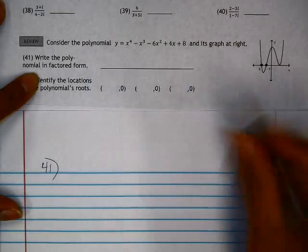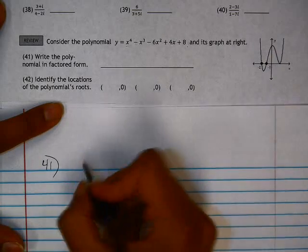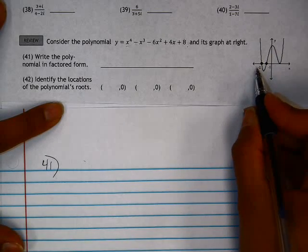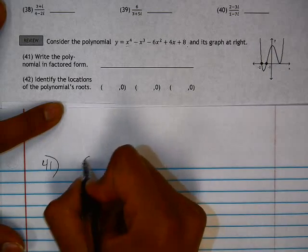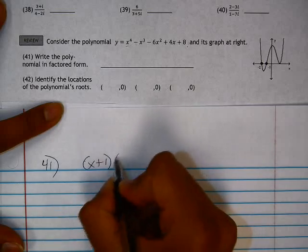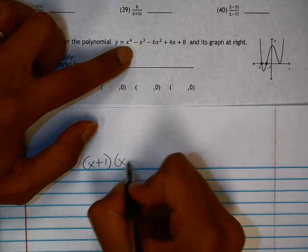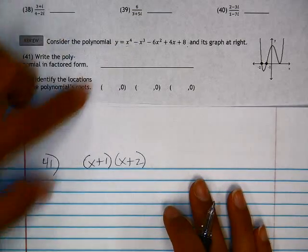So in this graph, we're given the roots are at negative 1 and negative 2. That means that x plus 1 would have to be a factor of this polynomial, and x plus 2 would also have to be one of the factors.